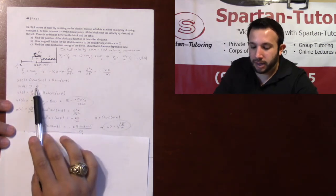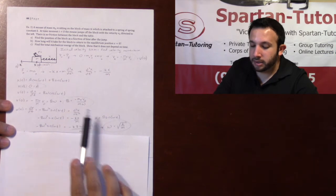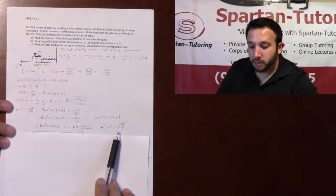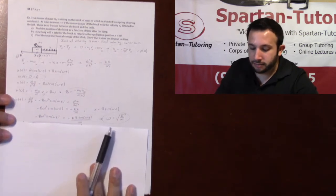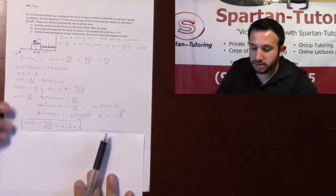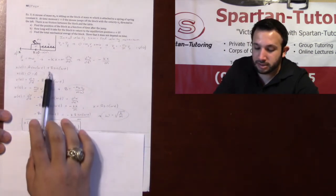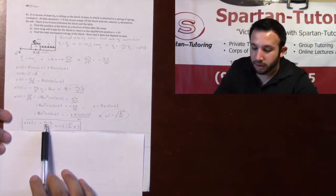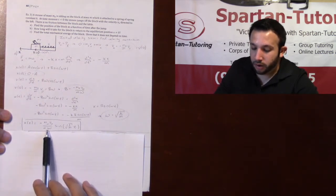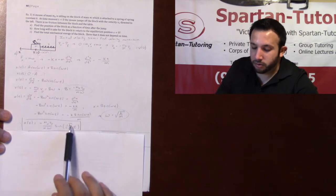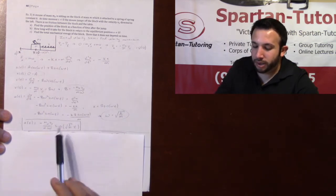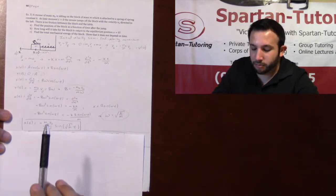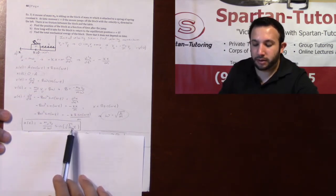And now that you have a, now that you have b, now that you have omega, you can find your position as a function of time. And so finding your position as a function of time, this is equal to b, which is negative m0 v0 over m omega sin square root of k over m times t. If you want to replace that omega with square root k over m, be my guest. But there is your final answer.